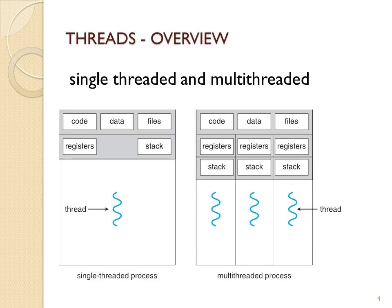Here's an overview of what multithreaded processes would look like. A process that does not use multiple threads is like the figure on the left — it's just one thread of execution.